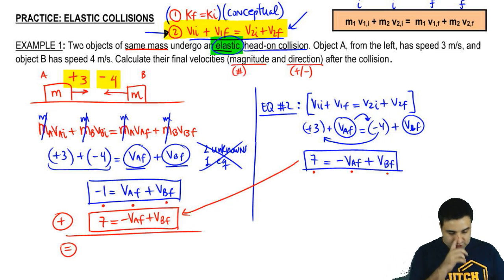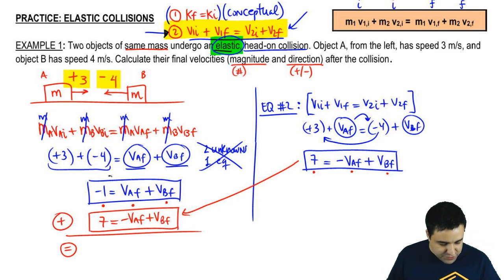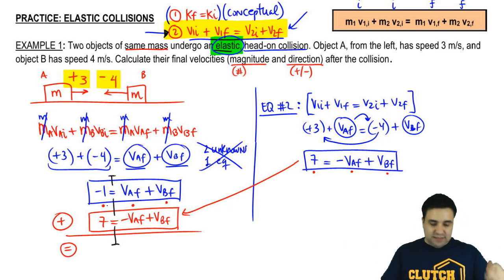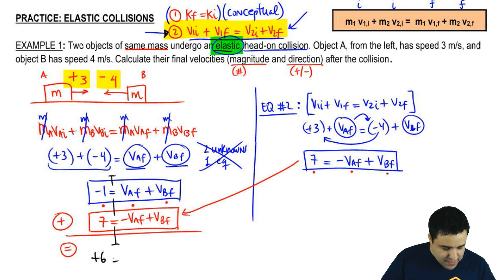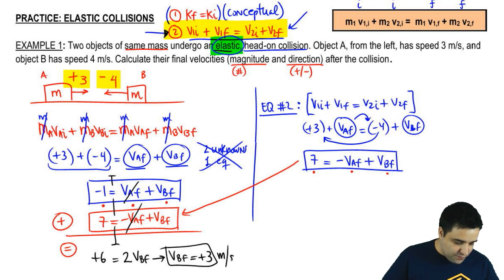And the way that you add equations is everything to the left, just as a quick reminder, everything to the left of the equal sign gets added. So, negative 1 plus 7 is plus 6, and everything to the right of the equal sign gets added. So, I have VA plus negative VA, so VA plus negative VA just cancels, equals VB plus VB, that's 2 VB, 2 VBF, which means VBF is 6 divided by 2, 3, positive 3. VBF is positive 3.